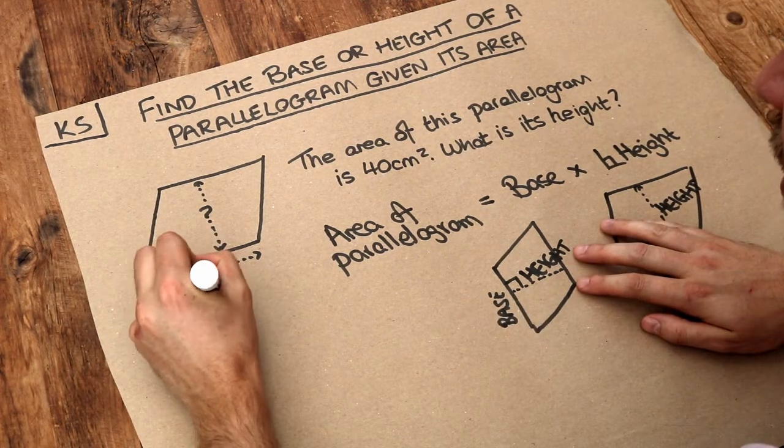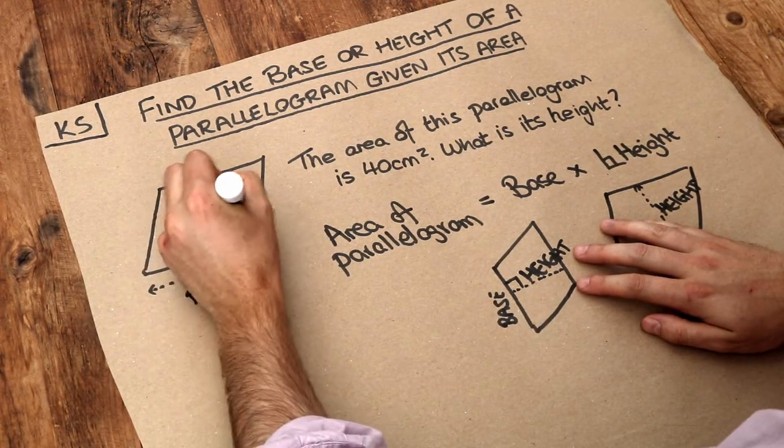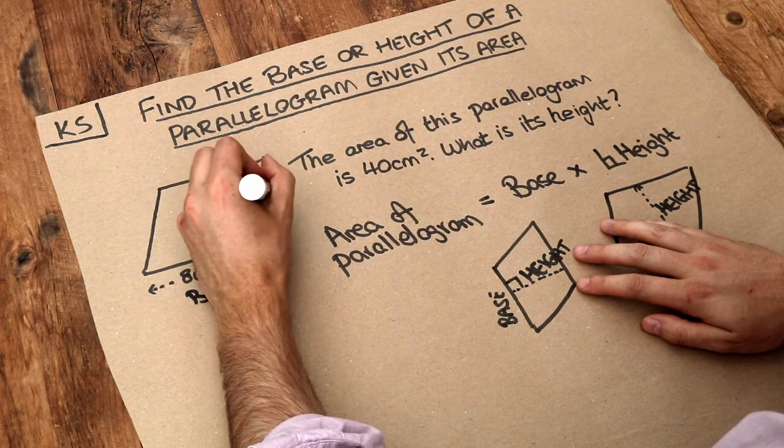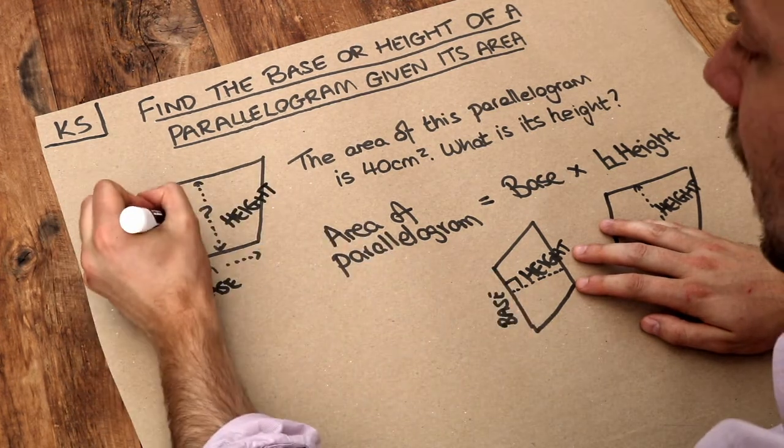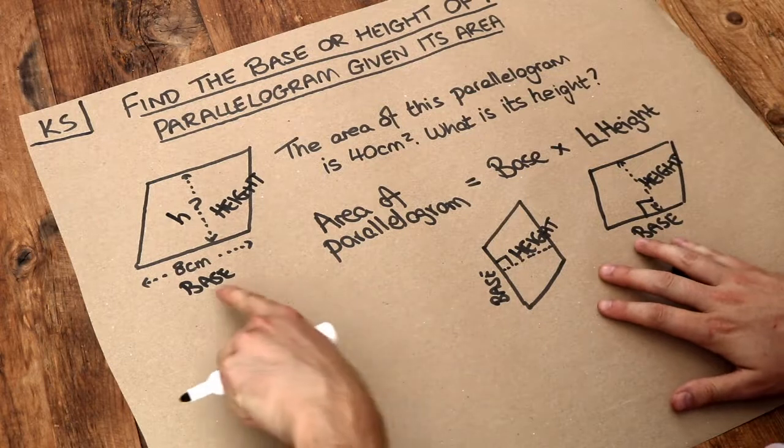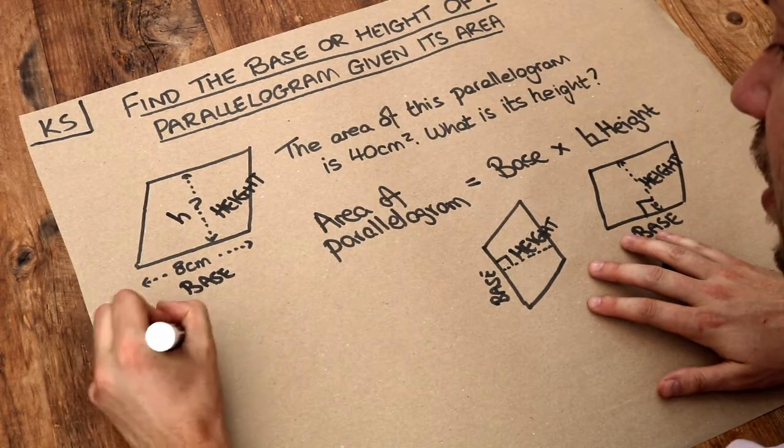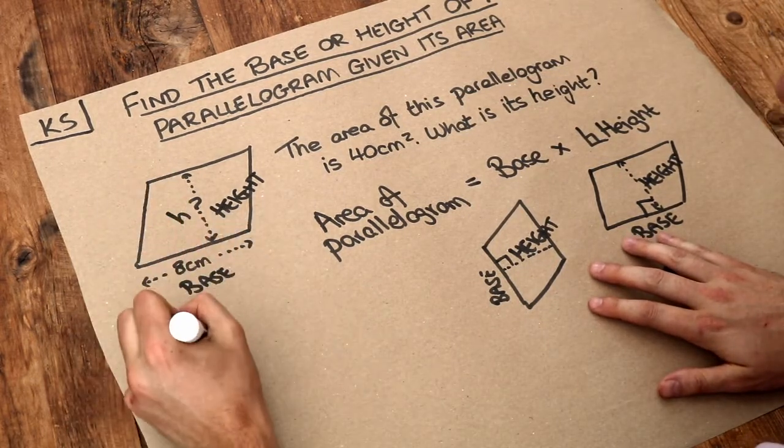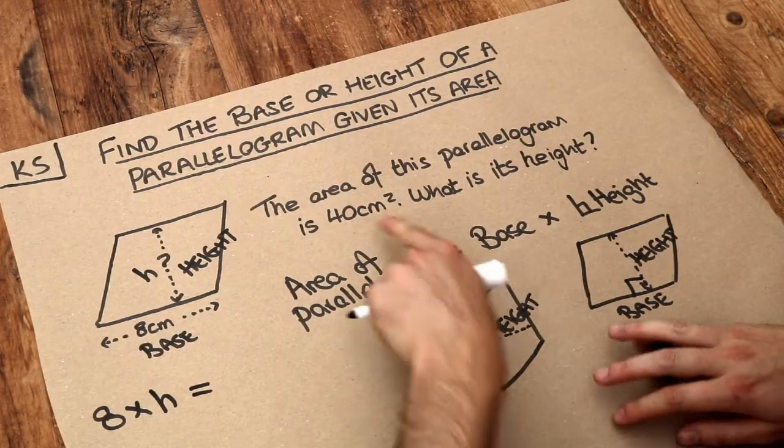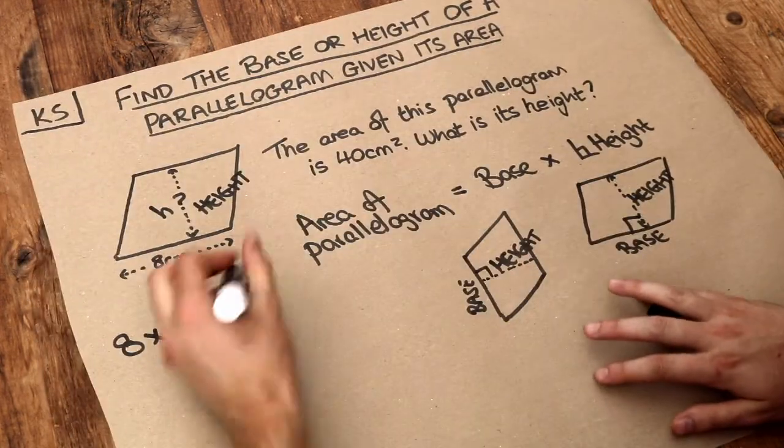Well if we make this the base and this the height, and let's call this height H, just to give it a letter. Then the base, which is 8, times by that height, which is H, is equal to the area which we're told is 40.